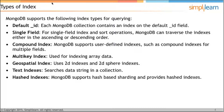Then we have a multi-key index, which is used for indexing array data. Suppose we have an array called hobbies containing TT, badminton, and volleyball. Internally, MongoDB creates an index for every value inside that array — it will create a different index for hobbies.cricket, hobbies.tt, and hobbies.badminton. That is a multi-key index.